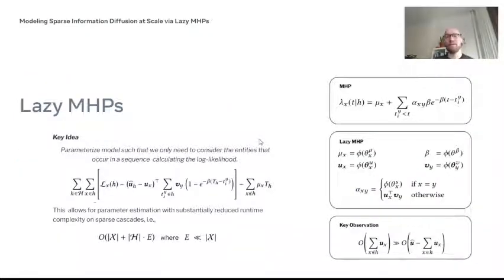It turns out we can, and this is the main contribution of our work: to develop a model that can exploit this. The main idea of our approach is to design an inference procedure that needs to consider only the entities that occur in the sequence and not all non-occurring ones too. I'm not going into much technical detail since the derivations are somewhat involved, but I'd like to give you a high level idea of how this works.